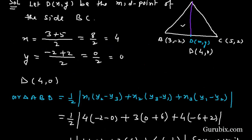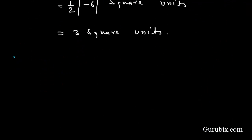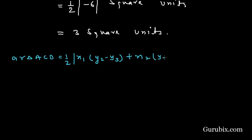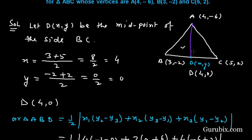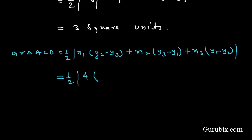Now we shall find the area of triangle ACD using the same formula: Area = (1/2)|x₁(y₂ - y₃) + x₂(y₃ - y₁) + x₃(y₁ - y₂)|. Here x₁ = 4 for vertex A, and the vertices are A(4, -6), C(5, 2), D(4, 0). We subtract y₃ from y₂, so in the first bracket we have (2 - 0).